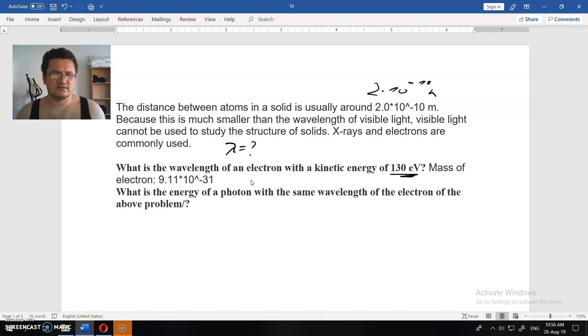X-rays and electrons are commonly used. What is the wavelength of an electron with a kinetic energy of 130 eV? Mass of the electron is 9.11×10⁻³¹ kg. And when we do that, what is the energy of a photon with the same wavelength?